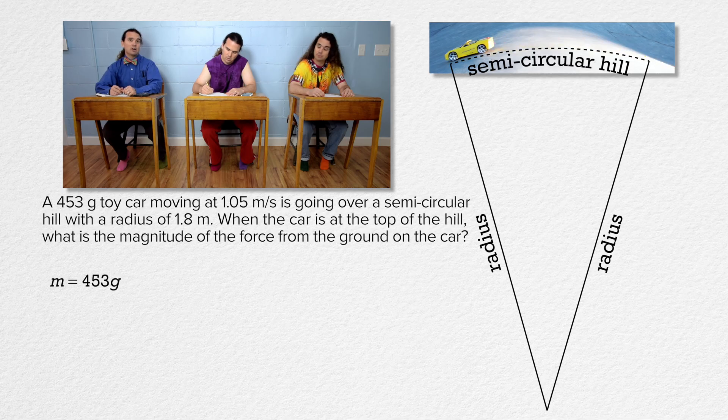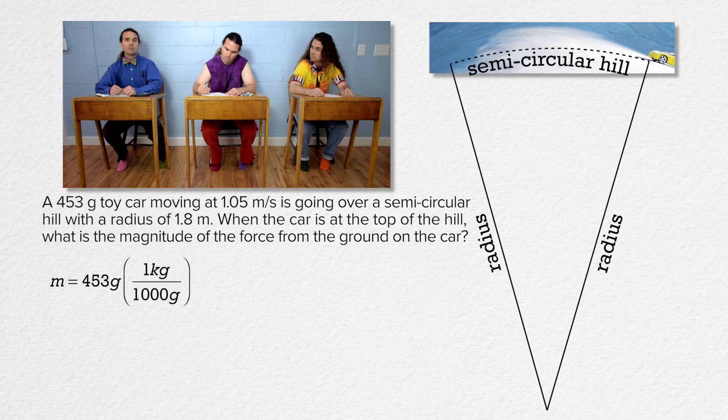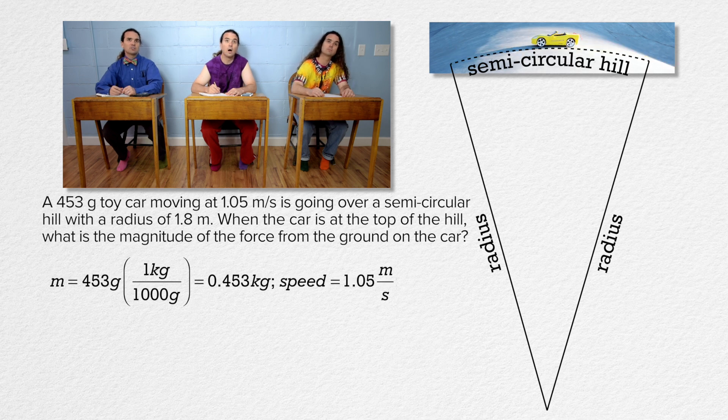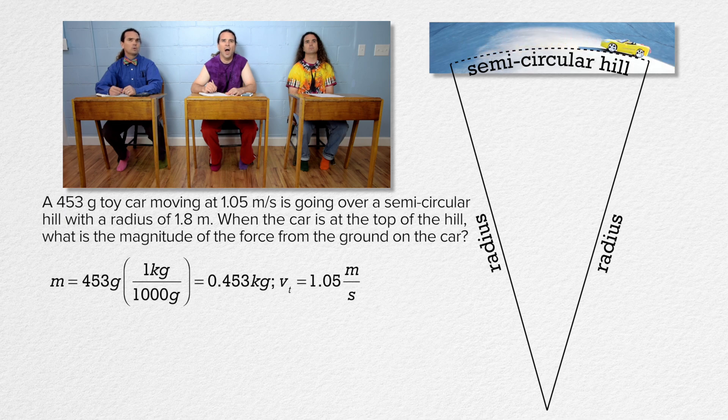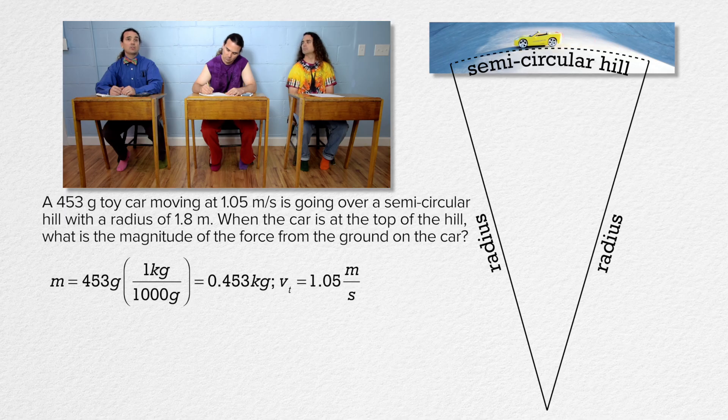The mass of the car equals 453 grams, which we multiplied by 1 kilogram over 1000 grams to convert to 0.453 kilograms. The speed of the car is 1.05 meters per second. Actually, Billy, that is the magnitude of the tangential velocity of the car because the car is moving along a circle. Right, that makes sense. Thanks. And the radius of the circle is 1.8 meters.